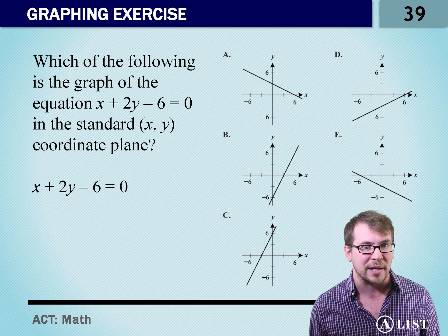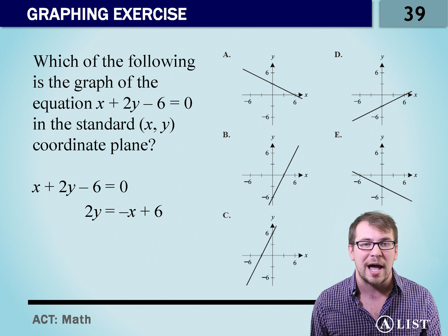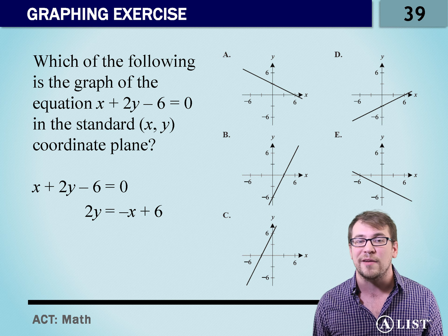that y equals mx plus b thing that we talked about a while ago. Add 6 to both sides. Subtract x from both sides. We're left with 2y equals negative x plus 6.